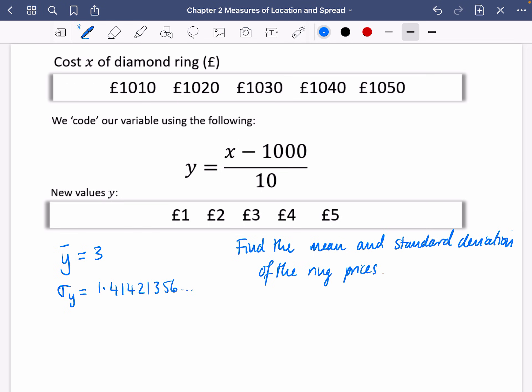Well, I now actually can find out if I want to find out what x bar is equal to. I know that y bar, which is 3, is equal to x bar minus 1,000 divided by 10. So I'm going to undo that coding by doing 3 times 10 and then adding on 1,000. When I do 3 times 10, I get 30. When I add on 1,000, I get 1,030.